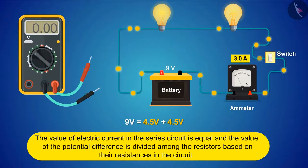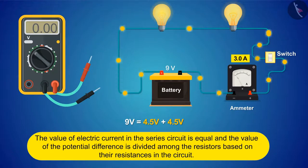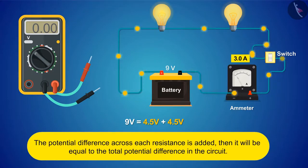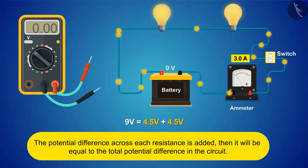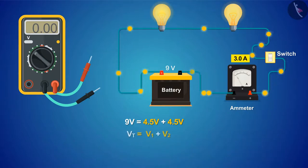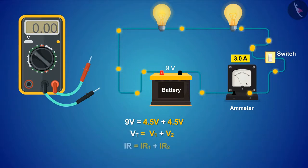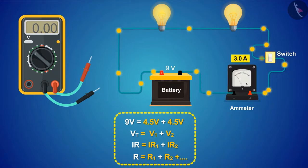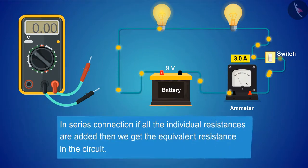From this activity it can be concluded: the value of electric current in a series circuit is equal throughout, and the potential difference is divided among the resistors based on their resistances. The second conclusion is that if the potential differences across each resistance are added, they equal the total potential difference in the circuit. Applying Ohm's law, since current is constant throughout, we get the equation showing that the equivalent resistance in a series connection equals the sum of all individual resistances.